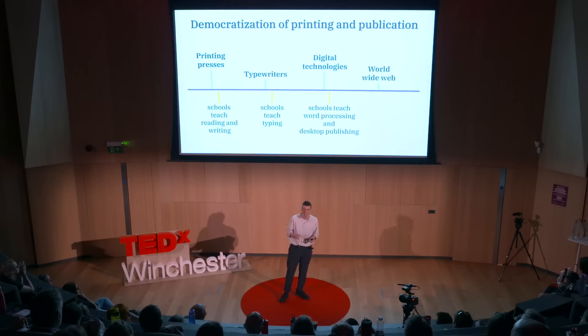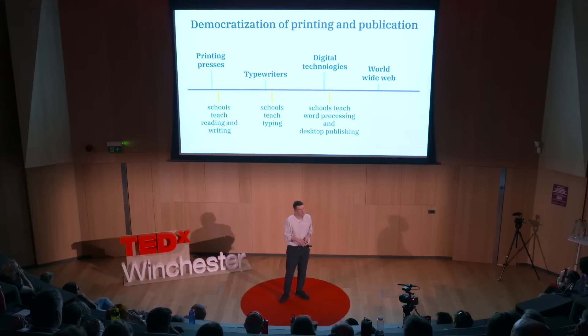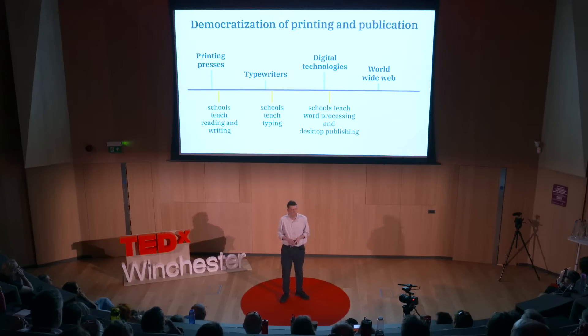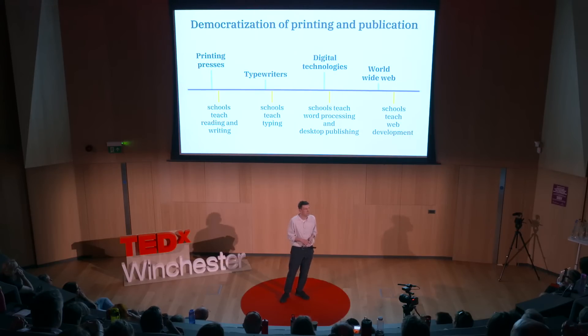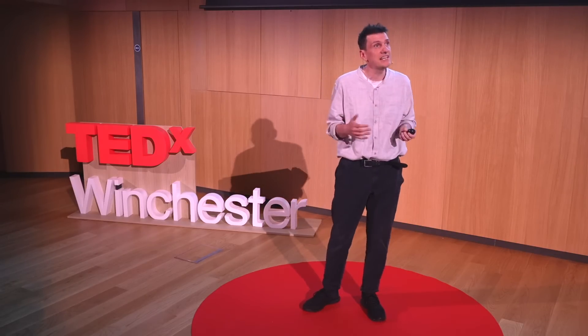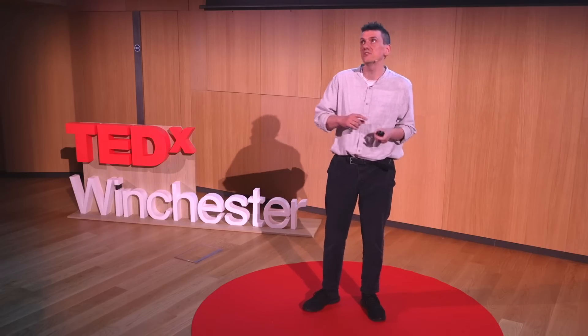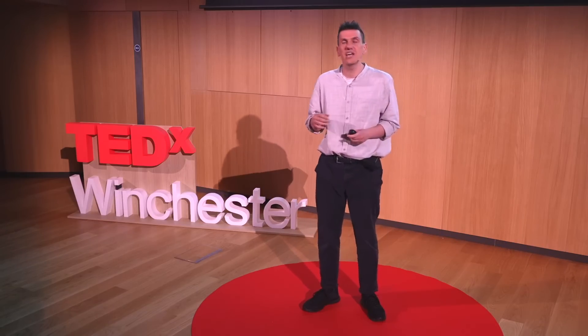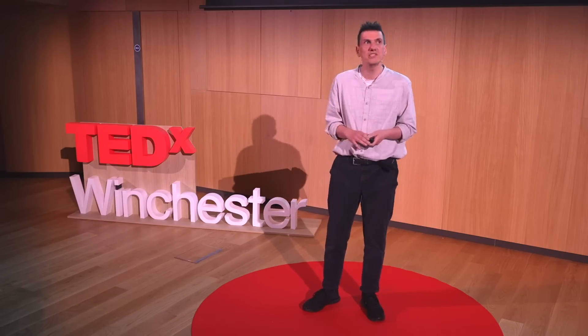The evolution continued. The internet replaced the need for some printed documents and enabled instant publication of any content. This transformed the workplace again, with every industry needing to publish online. Schools responded by teaching the languages and tools for creating web pages. Democratization of technology — the evolution of a technology so that it becomes increasingly accessible to broader swathes of the population — has been repeated for technology after technology. And as this happens, education has always needed to respond by changing what we teach children.